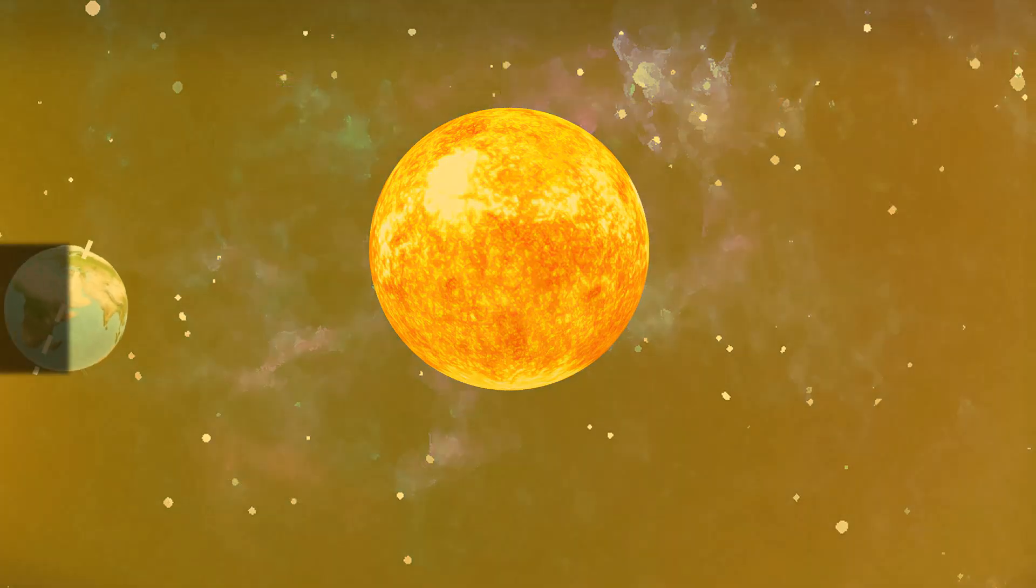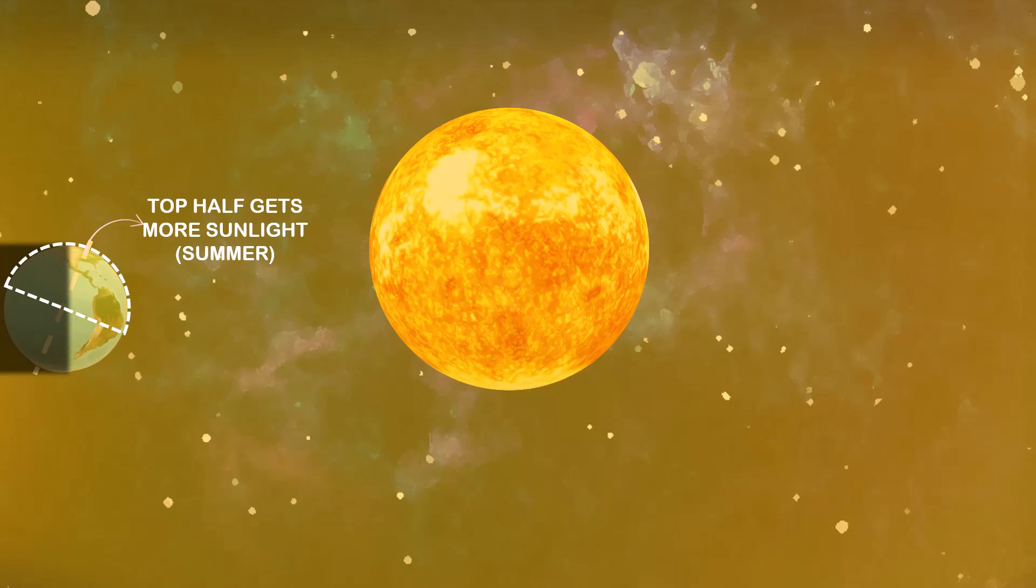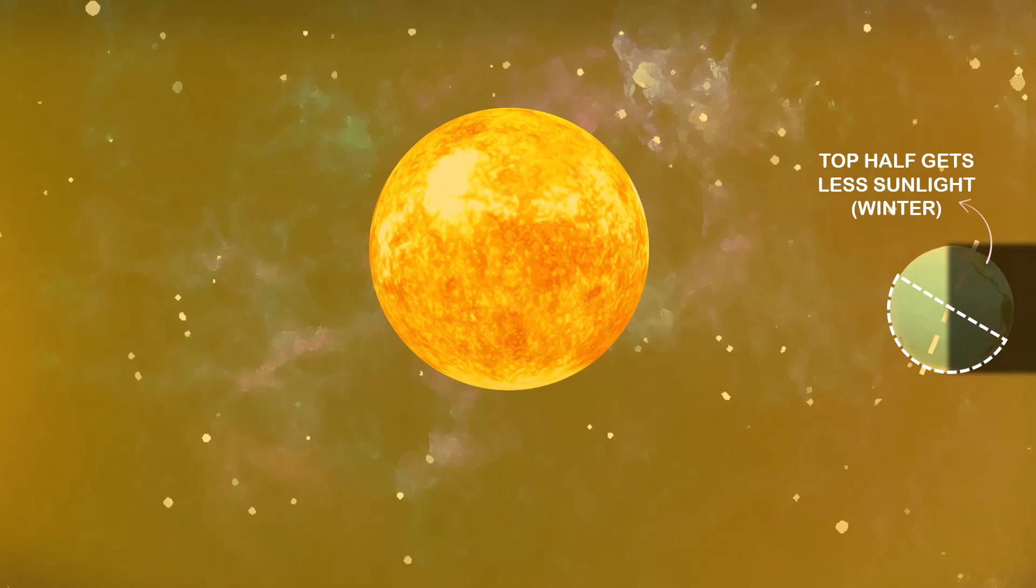Because the earth is tilted, sometimes the top half of the earth, or north, gets more sunlight. That's summer. And sometimes it gets less. That's winter. So depending on where the earth is around the sun, we get seasons.